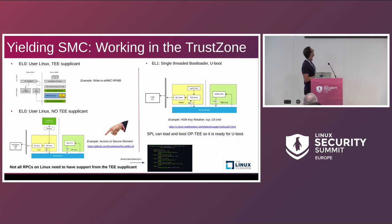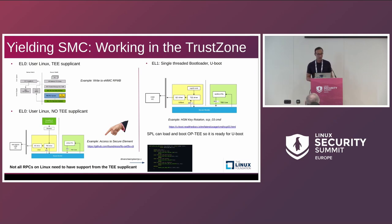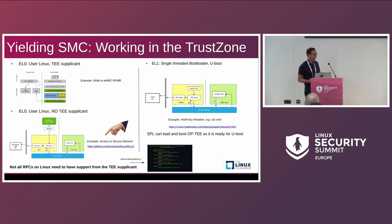Two examples of yielding SMC calls: one is writing to RPMB and the other is accessing a secure element. Accessing RPMB uses the supplicant because the kernel cannot access it directly yet. Currently, OP-TEE calls back to Linux, Linux releases the supplicant, the supplicant performs the write and returns. There is work ongoing in the kernel to enable direct access from Linux to RPMB without the supplicant, particularly because the TEE can boot before Linux — you want it to access RPMB without waiting for user space.